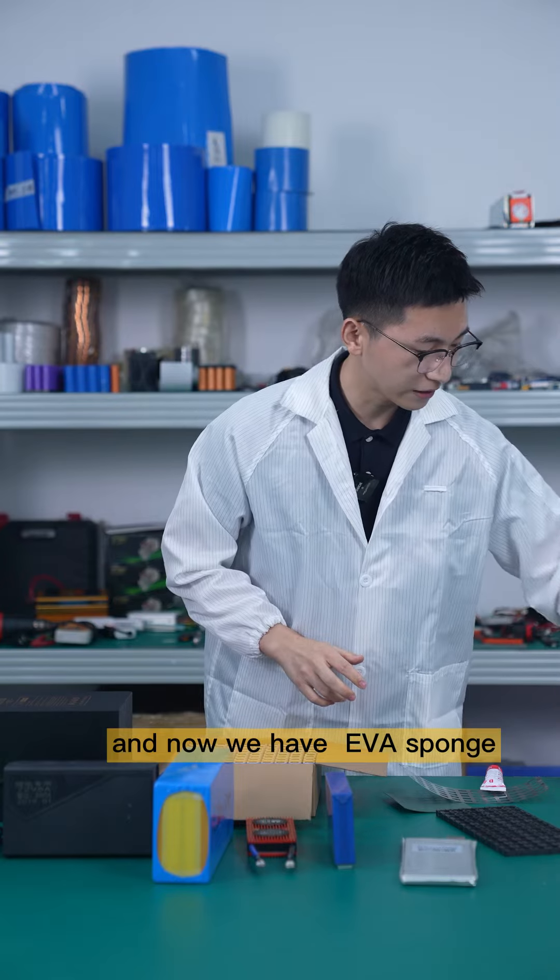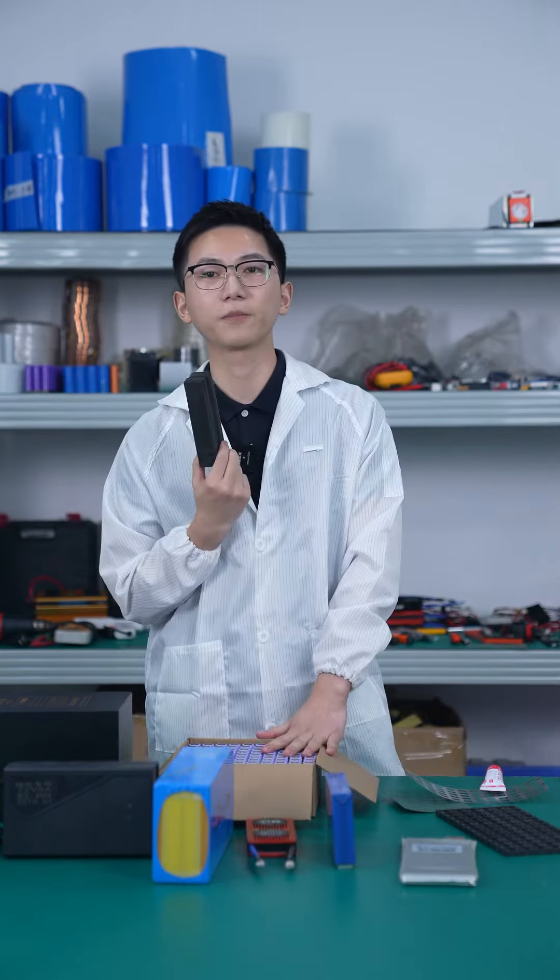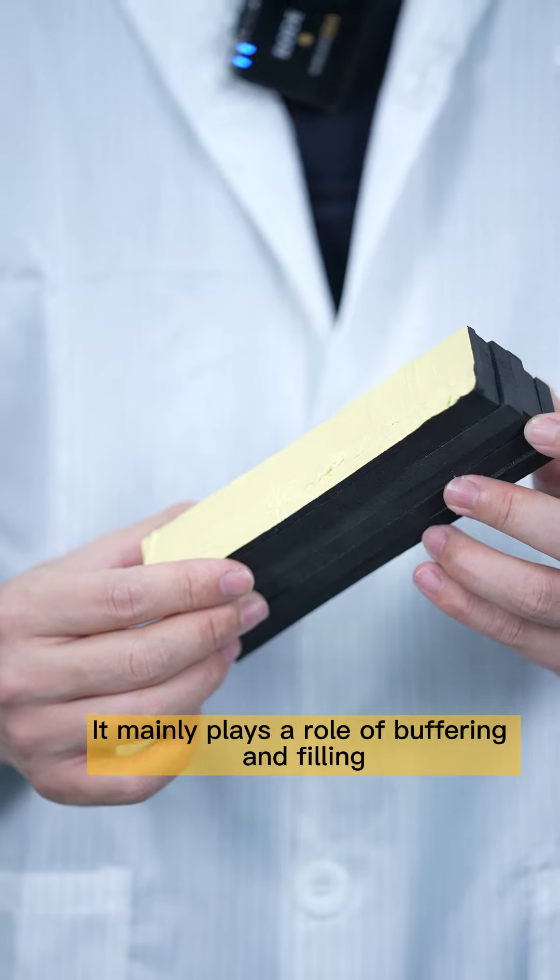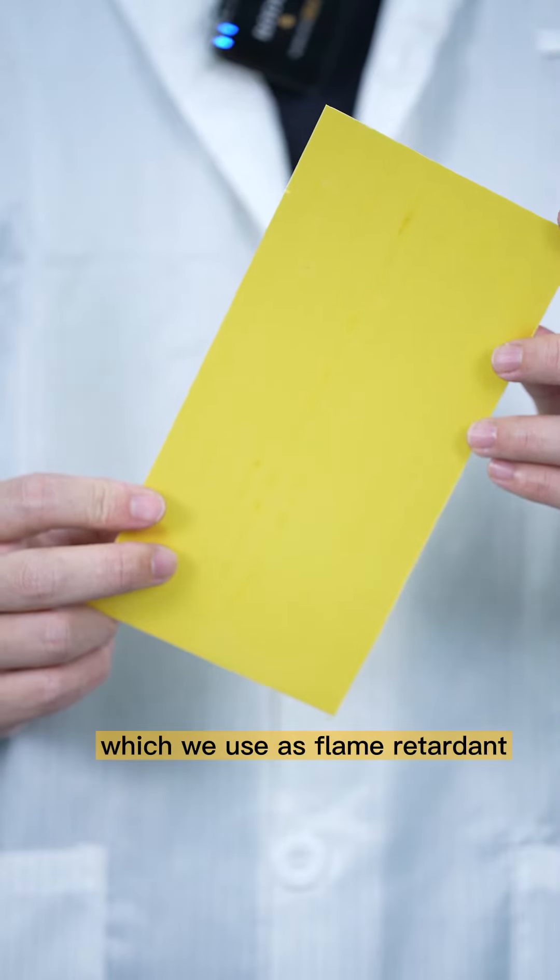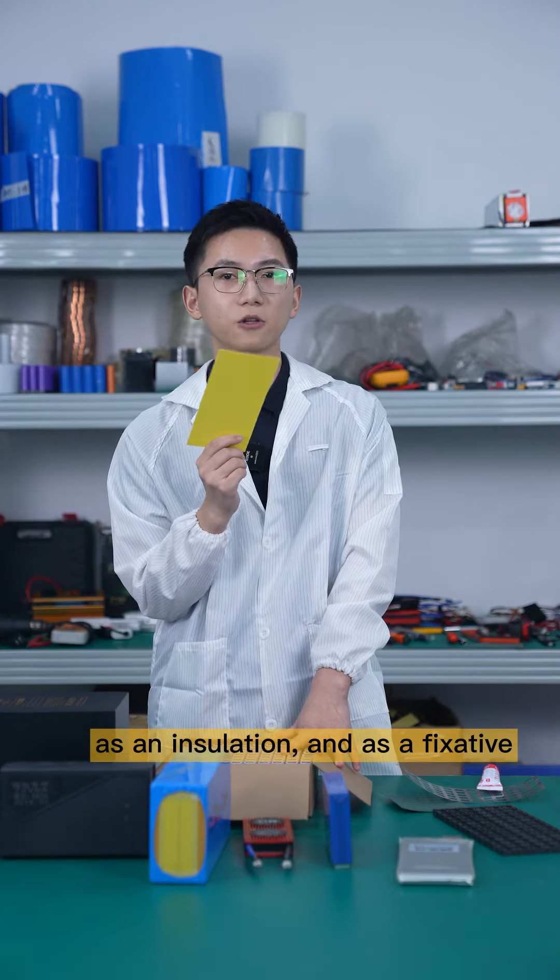Now we have the EVA pouch. It mainly places the rear-field button in the filling. And this one we call the boxy board, which we use as a flame retardant and as a fixative.